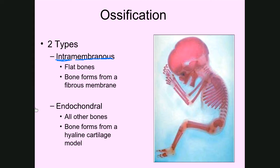That's intramembranous ossification. The other type of ossification is endochondral ossification. You can break down the name: endo means within, and chondral is a term that means cartilage. So endochondral ossification is bone formation that's happening from a hyaline cartilage model. Looking at the picture of the fetus, we've got a lot of long bones and irregular bones, and these types of bones are primarily formed through the endochondral ossification mechanism.